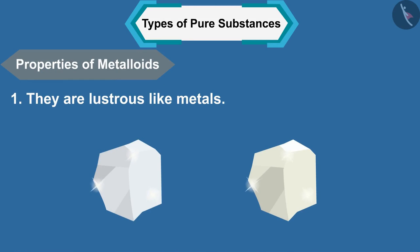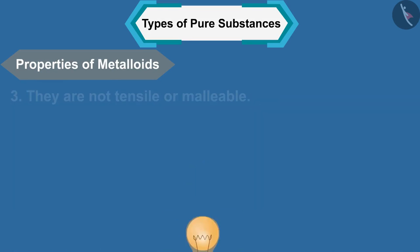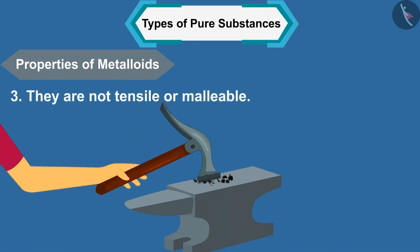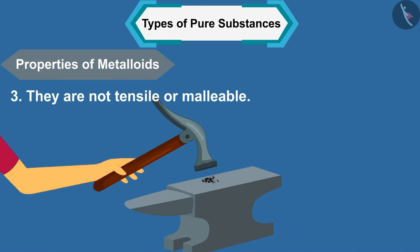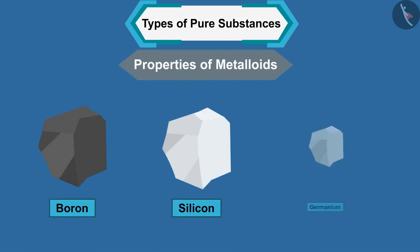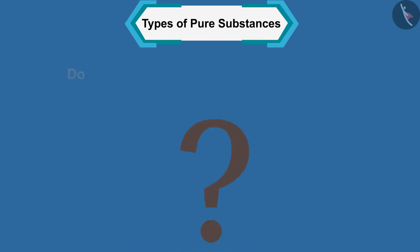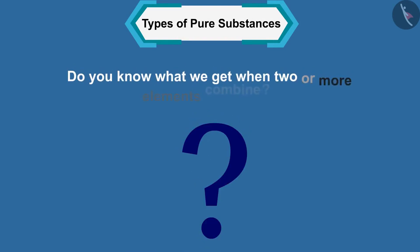Metalloids are substances whose properties resemble both metals and non-metals. They are lustrous like metals, they are semiconductors of electricity, and they are not tensile or malleable.